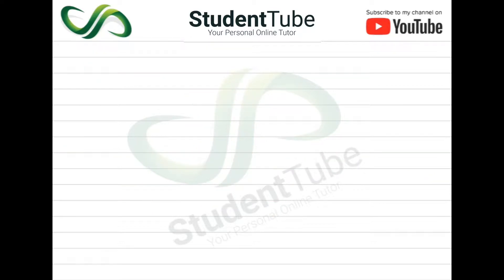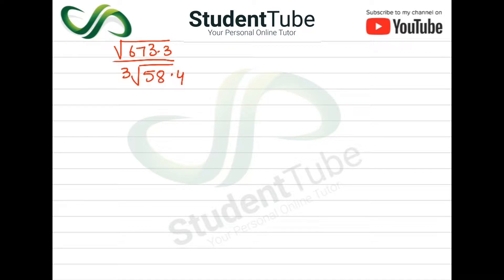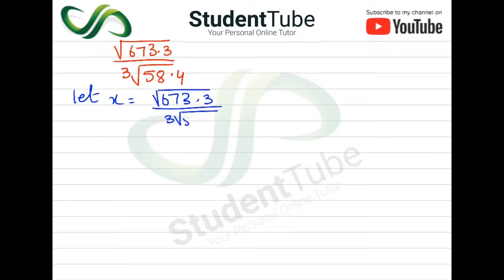Let's start. In Question Number 5, we have: x = √(673.3) / ∛(58.4). Taking log on both sides.